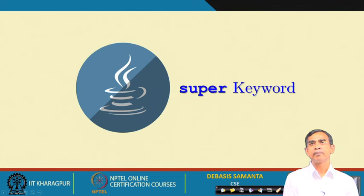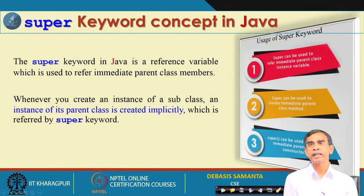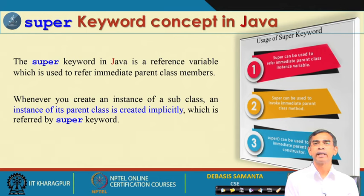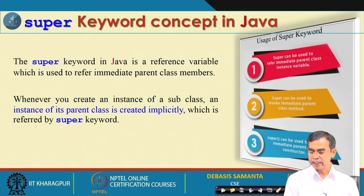However, the reverse is not possible — a superclass cannot access any variable or method defined in the subclass. It is one-way traffic. We can access superclass members from the subclass platform, but from the superclass we cannot access anything defined in the subclass. There is another very important concept: the super keyword, which is used for many purposes.